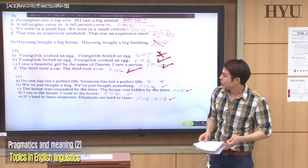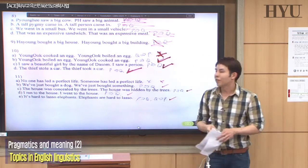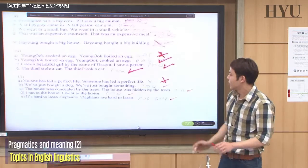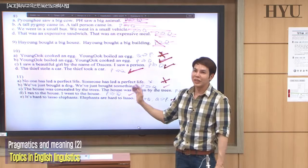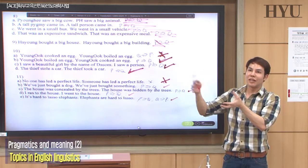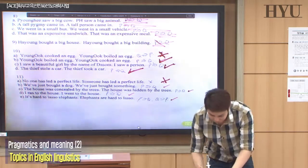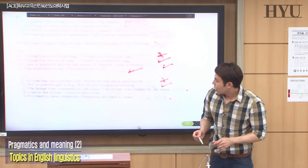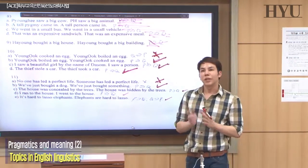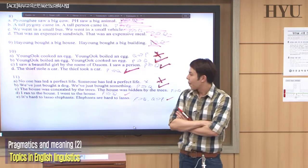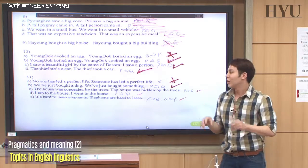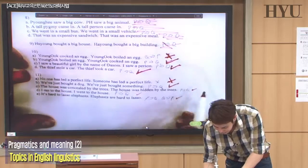The last question, number eleven: 'No one has led a perfect life' and 'someone has led a perfect life' — no relationship because 'no one' cannot mean 'someone.' For B, 'we have just bought a dog' and 'we have just bought something' — that entails it, because something can be a person, thing, or animal. For C, 'the house was concealed by the trees' and 'the house was hidden by the trees' — entailment both ways, because concealed and hidden are synonyms. So P entails Q and Q entails P. For D, 'I ran to the house' and 'I went to the house' — yes, P entails Q, because to run to a place means to go there with speed. Note that 'to' and 'into' are not the same prepositions. For E, 'it is hard to lasso elephants' and 'elephants are hard to lasso' — they say the same thing, just a matter of syntax, so they are perfect entailments of each other.